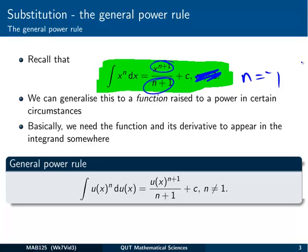So ignore n equals minus 1 for a minute. So basically what we're going to do is figure out a version of this rule that works for when we've got not just x to the n, but a function to the nth power.